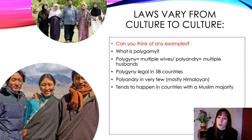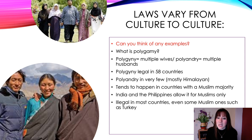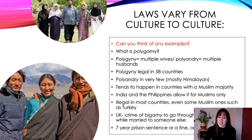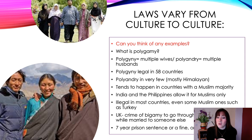Polygamy tends to happen in countries with a Muslim majority. India and the Philippines allow it for Muslims only. It is illegal in most countries, even some Muslim ones such as Turkey. In the UK, it is a crime — bigamy — to go through a marriage ceremony while being married to somebody else, and you could get up to a seven-year prison sentence, a fine, or both.